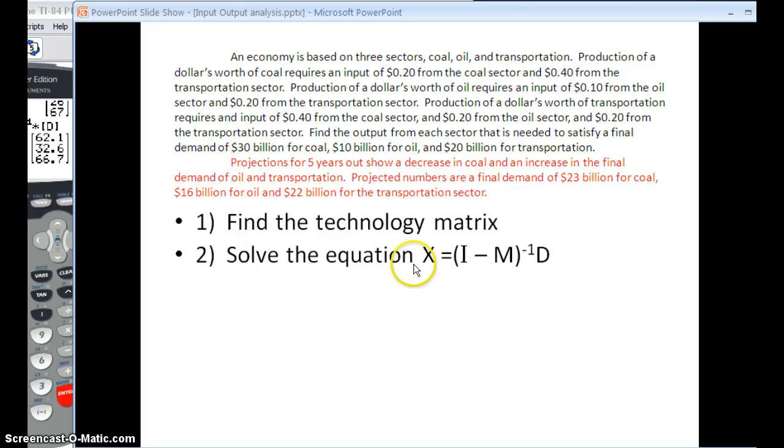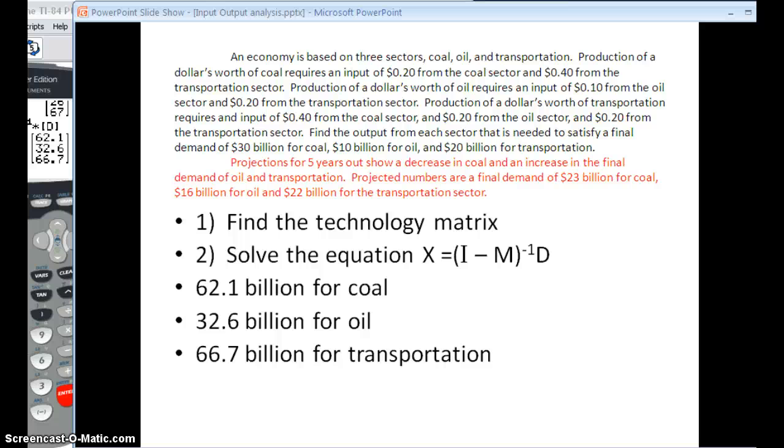So, back to my word problem. I've done step 2 here. I've solved the equation, and I put in the new demand numbers. And I have my output, and I just have to translate them. And so, I remember I used alphabetical order, which means the 62.1 billion is for coal. The 32.6 billion is for oil. And the 66.7 billion is for transportation. And so, I have used the technology matrix twice, and I've used my calculator to do all of the hard calculations in solving that. All I really had to do was enter all of the information, and I could complete an input-output analysis problem.